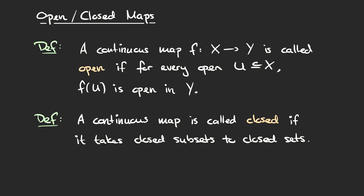It might be helpful to have an example. We can reuse our example of the constant map from ℝ to ℝ that takes the entire real line to a single point, say zero. We saw this is not an open map because the open set of the entire reals is mapped to a point which is not open. However, this map is a closed map because any subset of the reals is mapped to a single point, which is closed — so in particular, any closed subset is mapped to a closed set. Here we have an example of a map that is not open, but is closed.